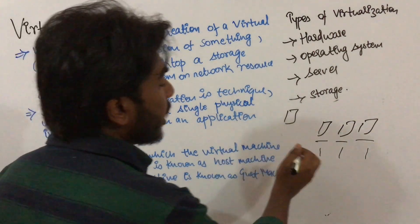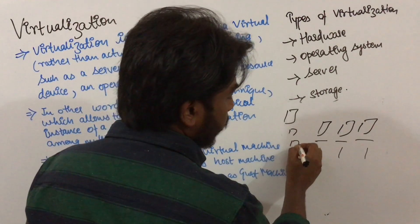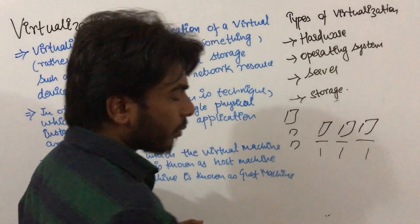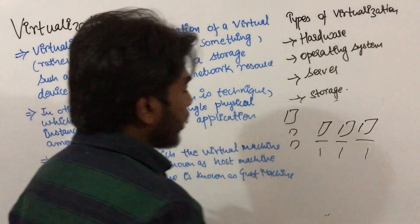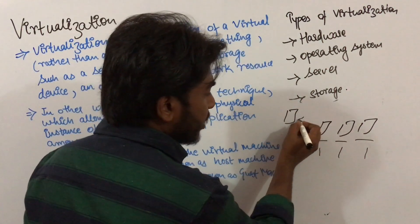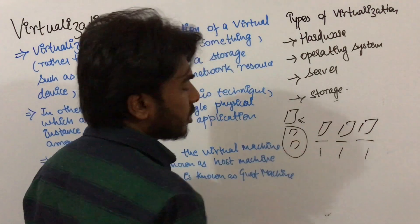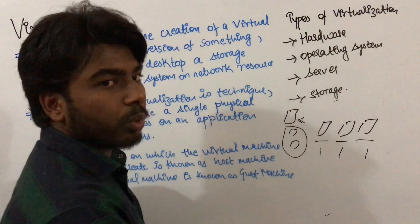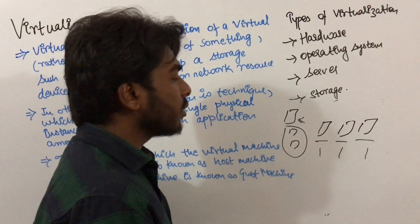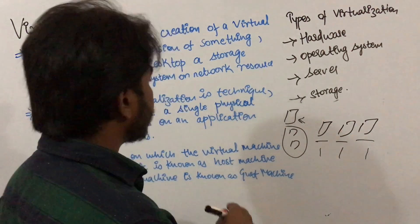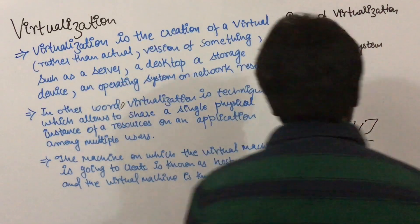One is, they can buy three servers for each of them. Or, they can virtualize the existing server into two more servers. So this is a more efficient and more cost effective way. That is virtualization.